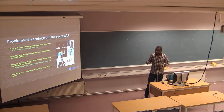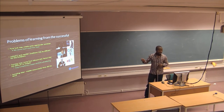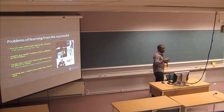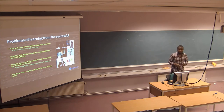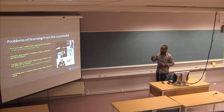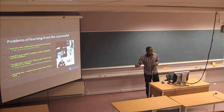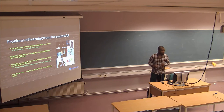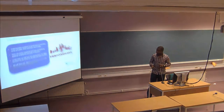Another problem is sampling bias — the kind of things a successful company or person would advise you have been tried by a lot of other people who have failed. Probably many people have tried the same things and it didn't work. So these are some of the problems of learning from successful people.